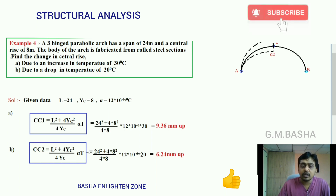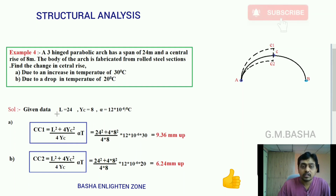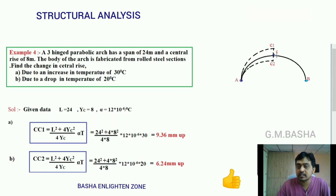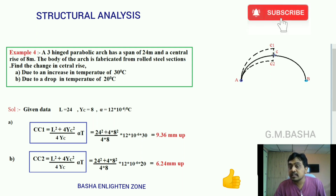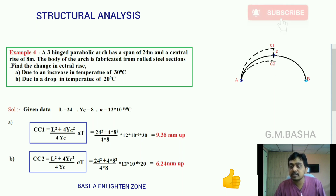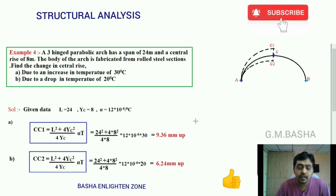For the drop in temperature, all values remain the same — you just change T to 20°C — and you get the result 6.24 mm. So whenever there is an increase in temperature, the central rise increases from 8 m by 9.36 mm, and whenever there is a drop in temperature, the central rise drops by 6.24 mm. This is the concept: a three-hinged arch simply changes its central rise — it may expand or contract due to temperature change.